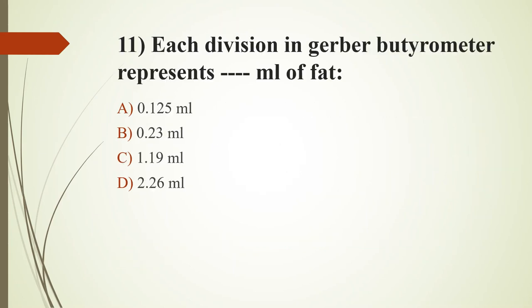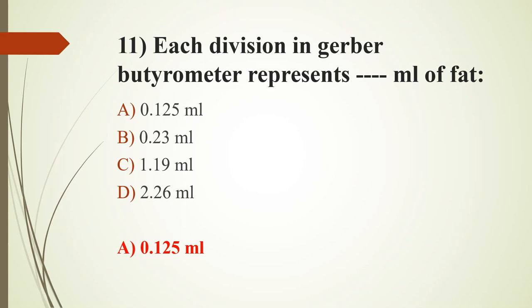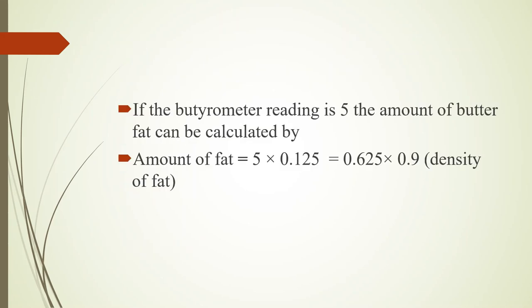Eleventh question: each division of the Gerber butyrometer represents how many ml of fat? Option A, 0.125 ml; option B, 0.23 ml; option C, 1.19 ml; option D, 2.26 ml. The answer is option A, 0.125 ml. The butyrometer has a 0 to 10 scale, and each division consists of 0.125 ml of fat. If the butyrometer reading is 5, the amount of butterfat is calculated as 5 × 0.125 × 0.9 (where 0.9 is the density of fat).